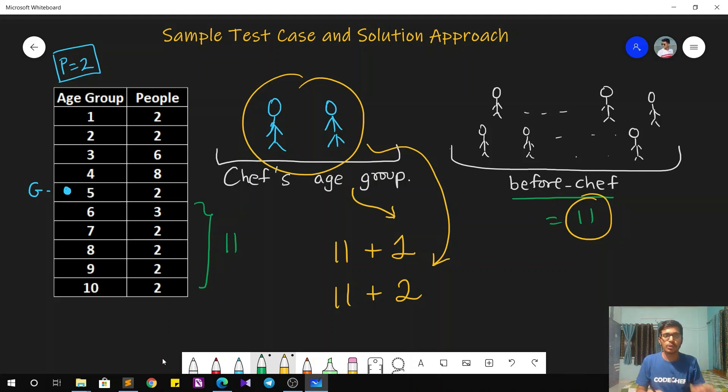So once we have these both counts, we just have to divide them by the given P to get the desired answer. That is if the total count in this case will be 12. In this case, it will be 13. So to vaccinate 12 people at the rate of 2 people per day, it will take a total of 6 days.